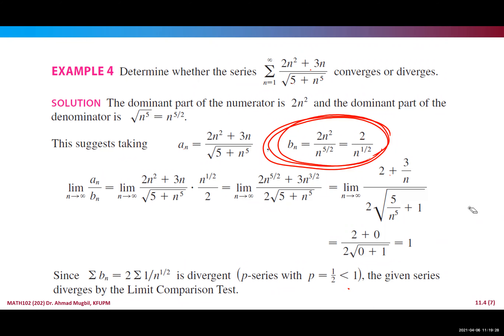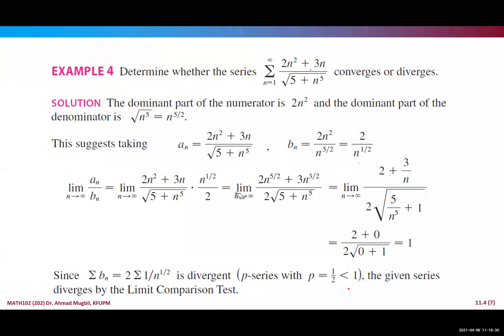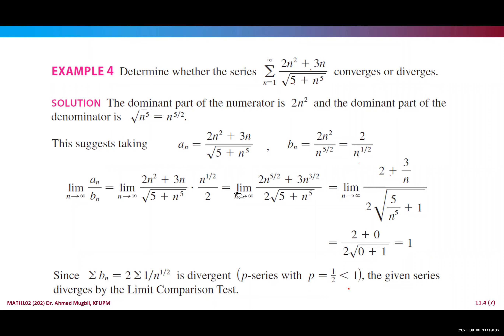The main task is identifying the right series to compare with, and carefully computing the limit. Any mistake — getting zero, infinity, or a negative number — means an error, since positive over positive must be positive. The case when the limit is zero or infinity will be discussed next class. Any questions? We'll continue section 11.4 on Thursday. Let's stop and get ready for the quiz.